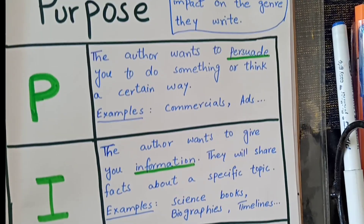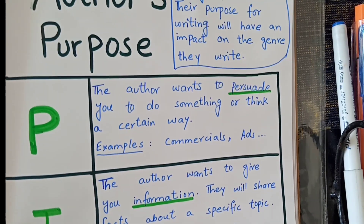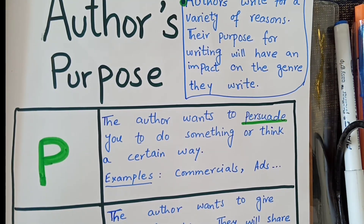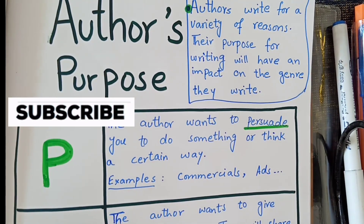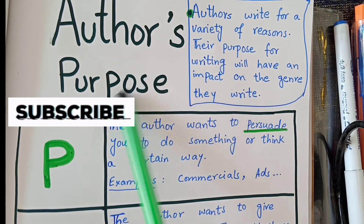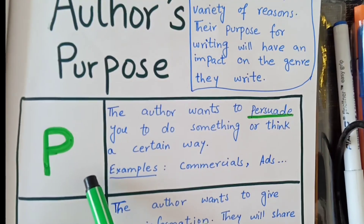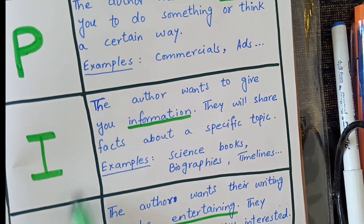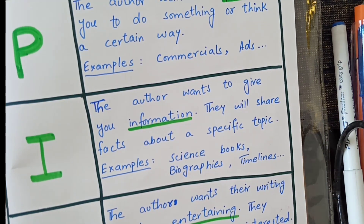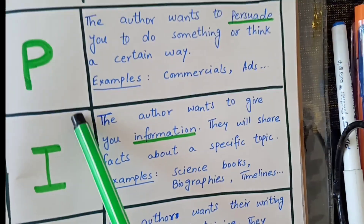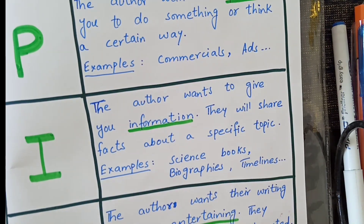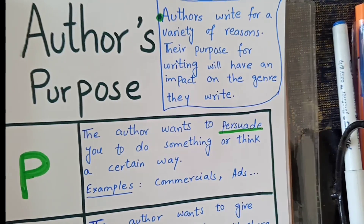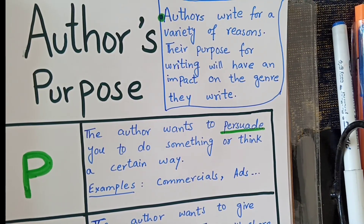I hope today's lecture was easy to understand. To summarize: the author's purpose in writing shows three different ways — P for persuade, I for inform, and E for entertaining. We can remember it simply as PIE. This is the end of the lecture. I hope you liked it. Thanks to my viewers.